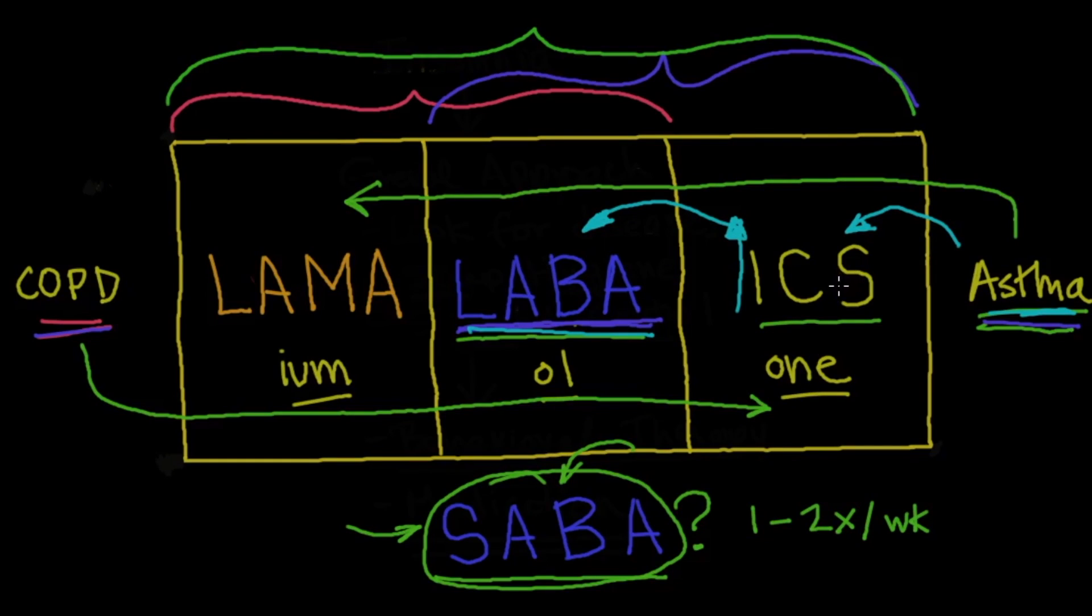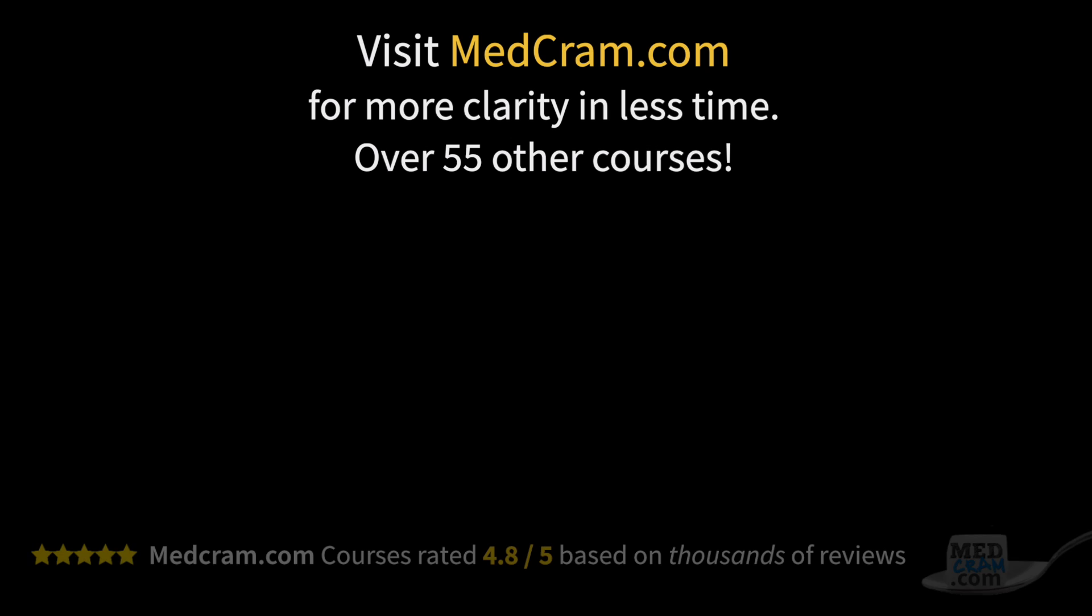Alternatively, I could also add a leukotriene receptor antagonist, and I didn't put that in here, but I'll just put it up here in the corner. A leukotriene receptor antagonist, and that's a type 4. So these are other things that you can think about, but this is the general modality that you'll see in the treatment between asthma and COPD. Thanks for joining us.